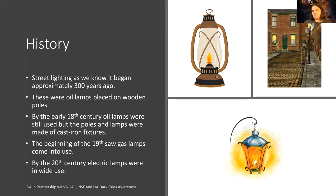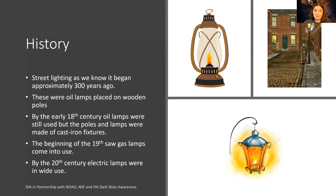In the 18th century, due to problems with fires caused by oil lamps, they transitioned from oil lamps on wooden poles to oil lamps on cast iron fixtures, which was much more structurally sound. In the 19th century they started using natural gas, and it wasn't until the 20th century with the invention of electricity and the light bulb that we got electric lamps and their widespread use. This is the progression from a dim little candle to light invading every area.